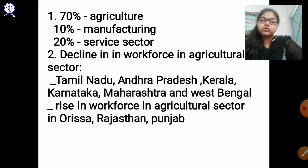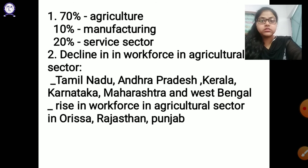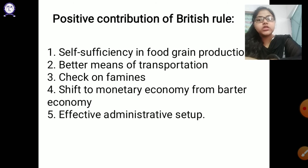There was a very big decline in workforce in the agricultural sector in Tamil Nadu, Andhra Pradesh, Kerala, Karnataka, Maharashtra, and West Bengal — drastic changes occurred there with very low rates of agricultural workforce. Whereas there was a rise in agricultural sector workforce in Odisha, Rajasthan, and Punjab. Next is infrastructure.